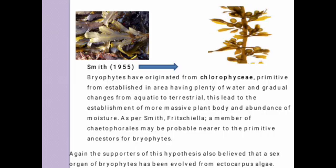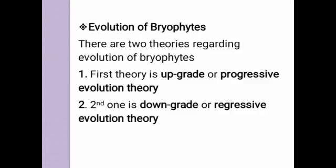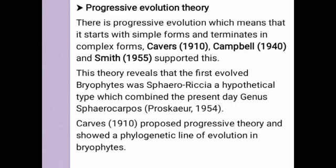There are two theories regarding the evolution of bryophytes. The first theory is the upgrade or progressive theory, while the second is the downgrade or regressive theory. Progressive evolution theory means a theory in which an organism starts from a simple form and converts into a complex one. In 1910, Cavers, in 1940 Campbell, and in 1955 Smith supported this theory.